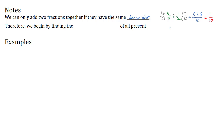Therefore, to add fractions together, we begin by finding the least common denominator of all the present denominators. Let's look at some examples where we're doing just that.